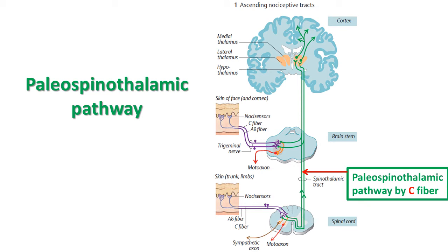The pathway differs from the neospinothalamic pathway in that only 10 to 25 percent of the neurons reach the thalamus. Others end in the reticular formation in the brainstem, the tectal area of the midbrain deep to the superior and inferior colliculi, and the periaqueductal gray area. From these brainstem areas, neurons may reach the ventral lateral and intralaminar nuclei of the thalamus, and others may go to the hypothalamus and areas of the basal brain such as the limbic system.